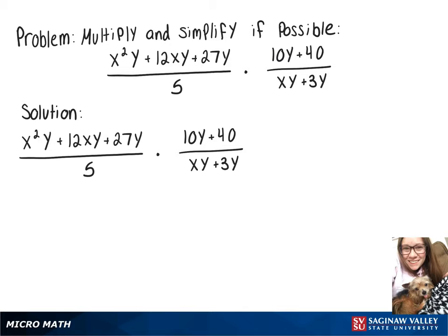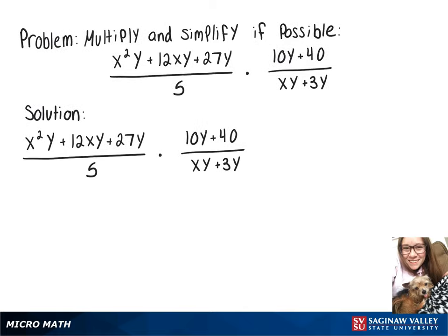In this video, we're going to multiply and simplify. So when we multiply across the top, we'll have x squared y plus 12xy plus 27y times 10y plus 40.